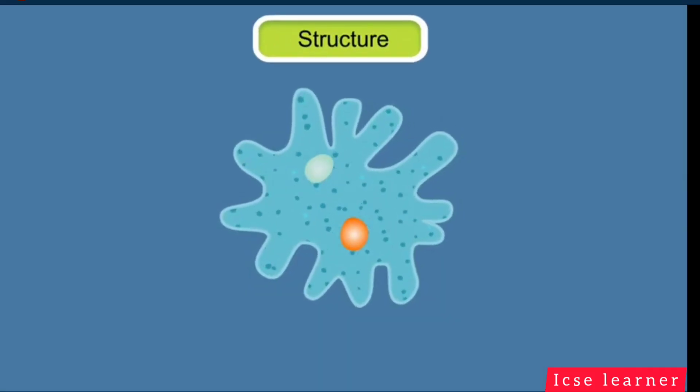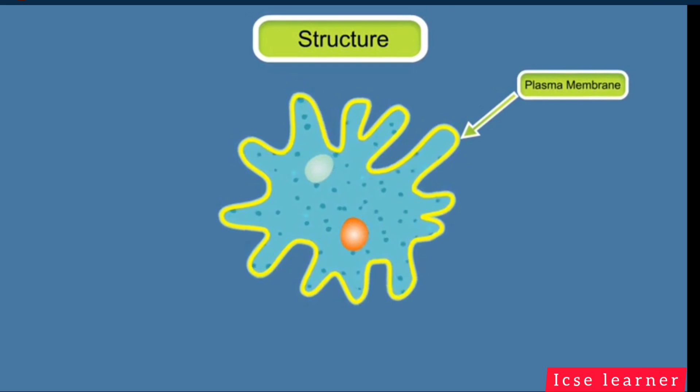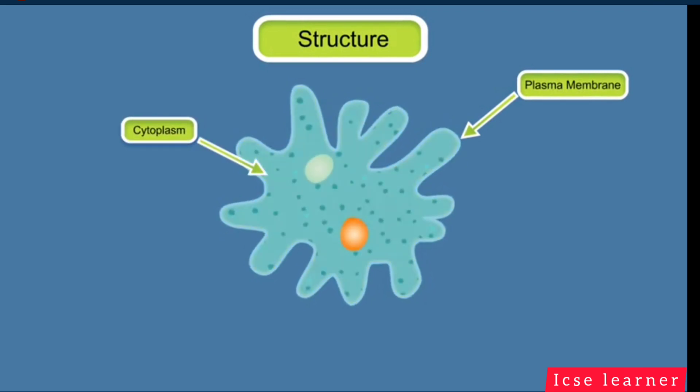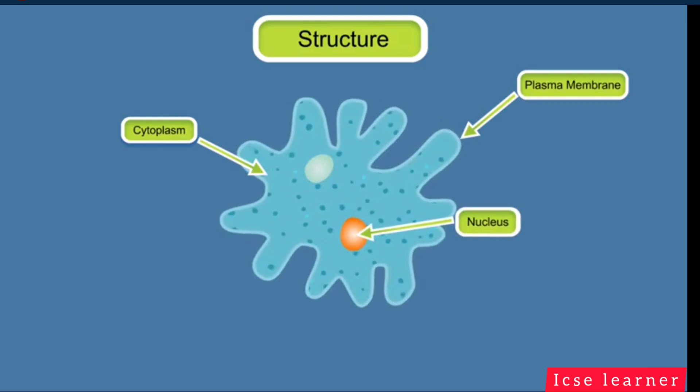Structure. An amoeba has an irregular cell covered by a thin layer of plasma membrane. The cytoplasm has a well-defined nucleus enclosed by a double-layered nuclear membrane.